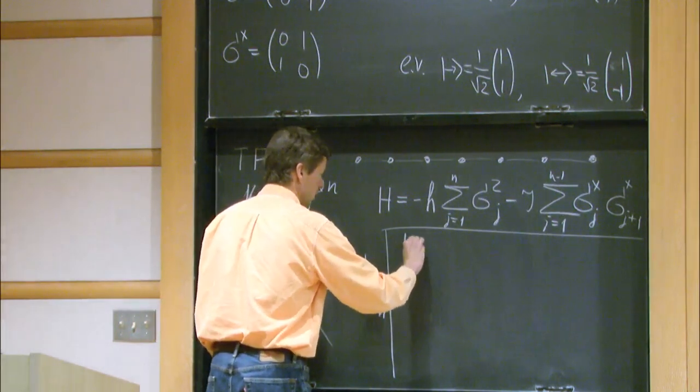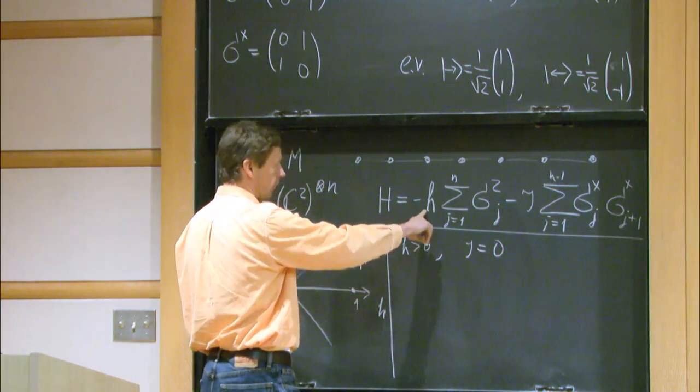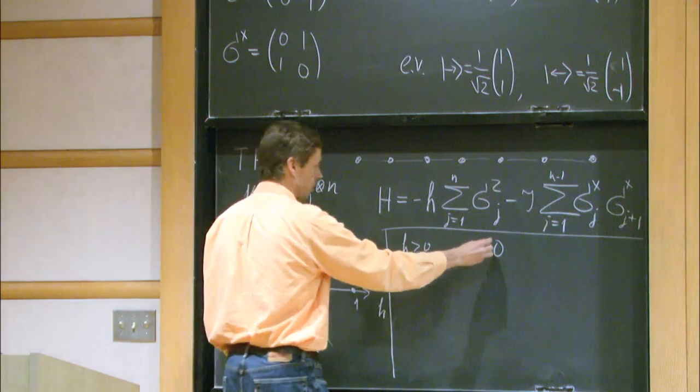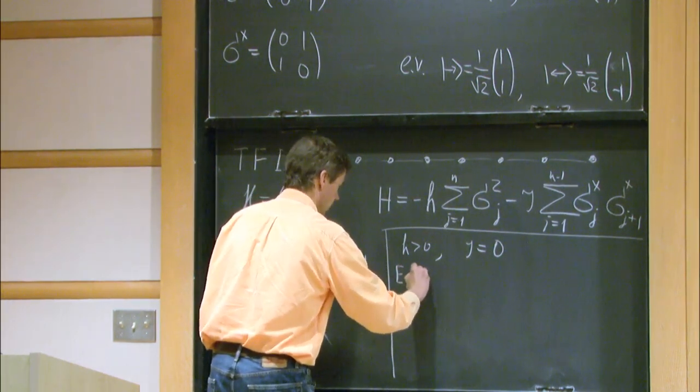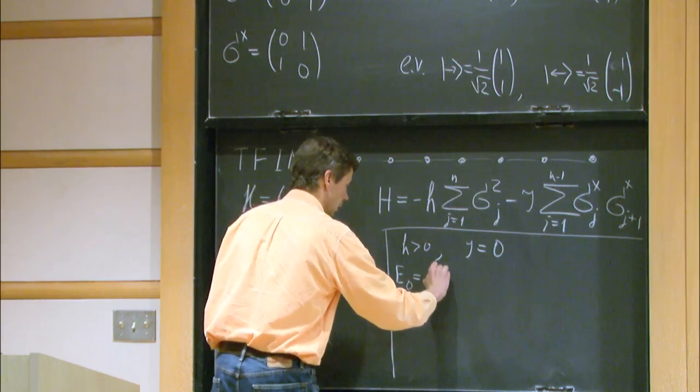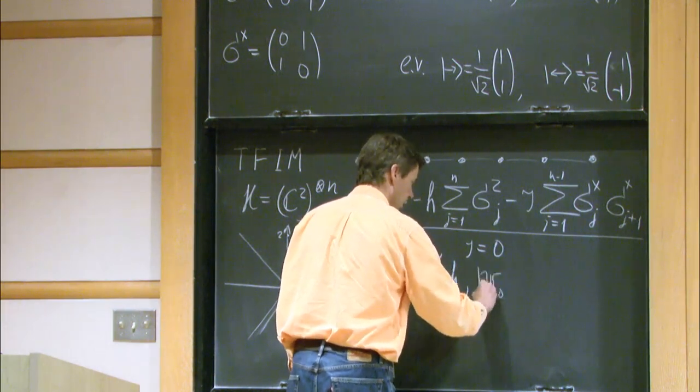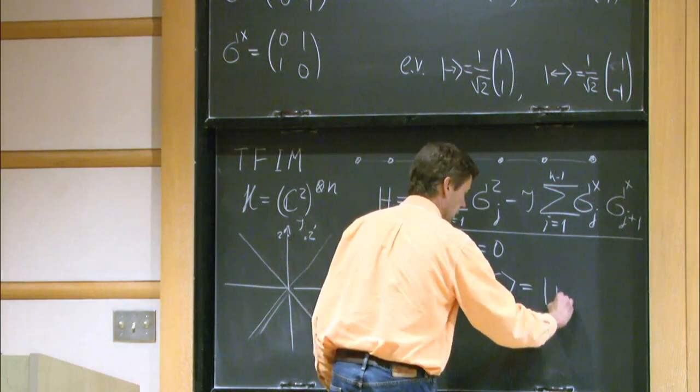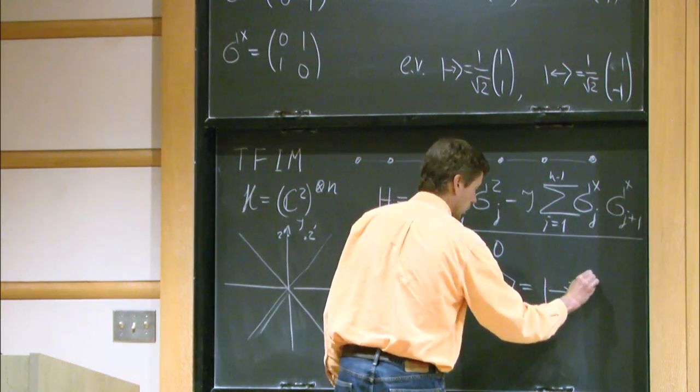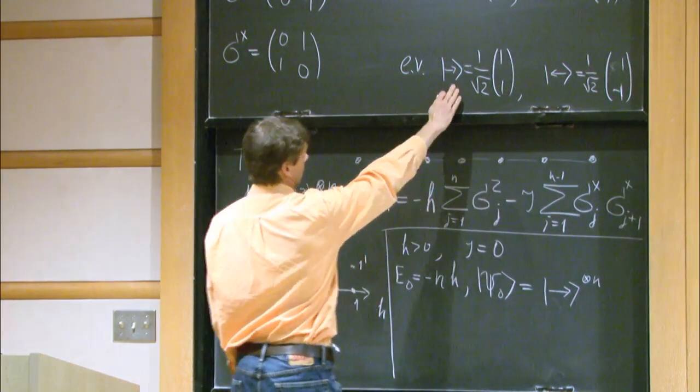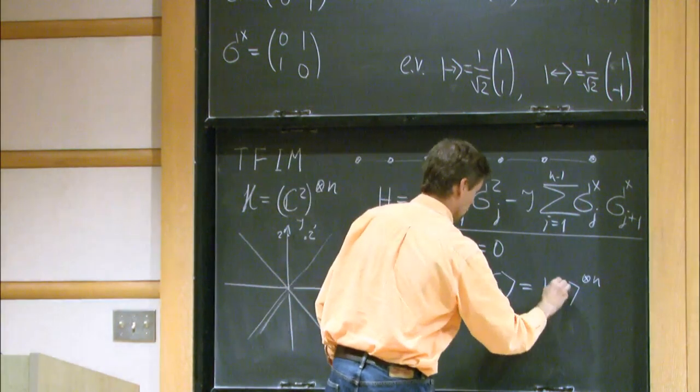So at point 1, H is greater than 0, J is 0, and we can find the ground state, the state with the lowest energy, and the corresponding eigenstate. So the eigenvalue is minus N times H. And the corresponding eigenvector is spin pointing to the right, tensor N.